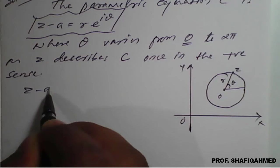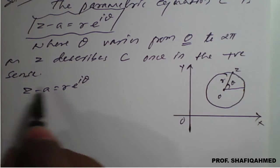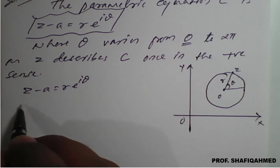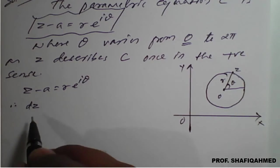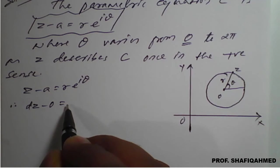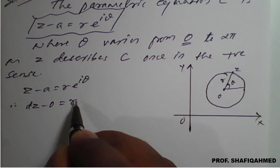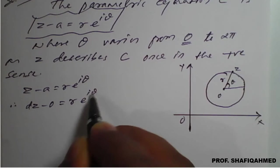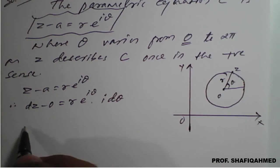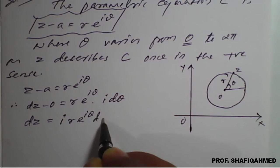Now, z minus a is nothing but r times e raised to iθ, where θ varies from 0 to 2π. If we differentiate, dz equals the differentiation of r times e raised to iθ, where a is a constant so its derivative is 0. Therefore dz equals r times e raised to iθ times i dθ, or dz = i · r · e^(iθ) dθ.